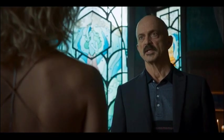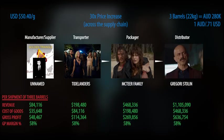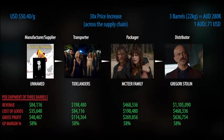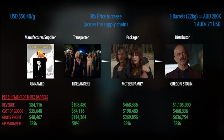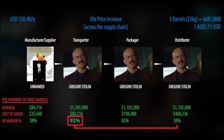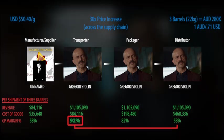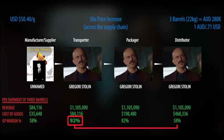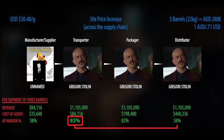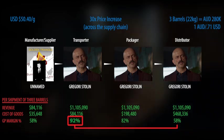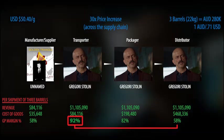So how much does Stolen stand to make? According to the UN, the street value of heroin in Australia is $50.40 per gram, and there is a 30-fold price increase across the heroin supply chain. Assuming each part of the supply chain takes an equal profit margin percentage, we can figure out revenue and cost at each point. If Stolen successfully disintermediates the supply chain, he stands to increase his profit margin from 58% to 92% — meaning for every million dollars in drug sales, he could keep as much as $920,000, minus costs of bringing Tidelander and McTeer services in-house. This is much more than the $580,000 per million he was hiding in his shell company for money laundering prior to disintermediation.